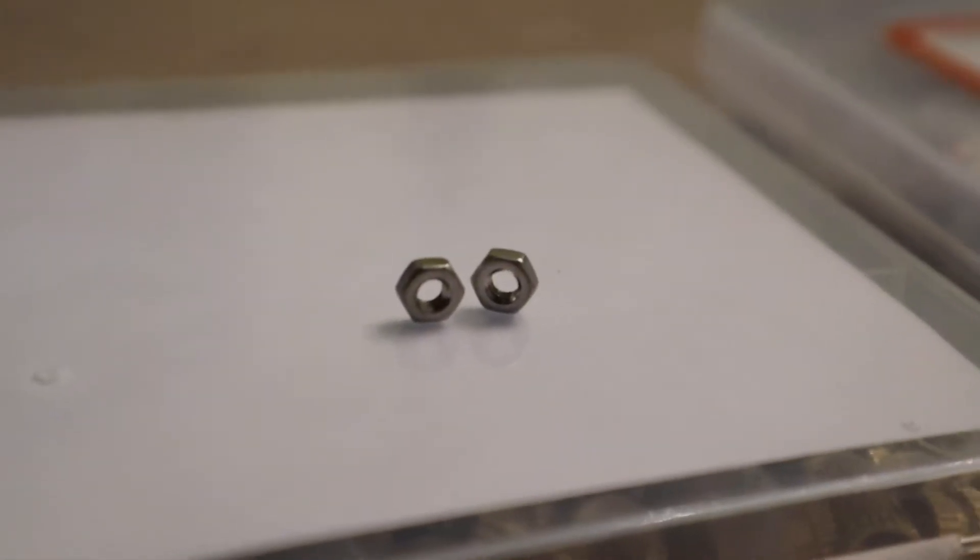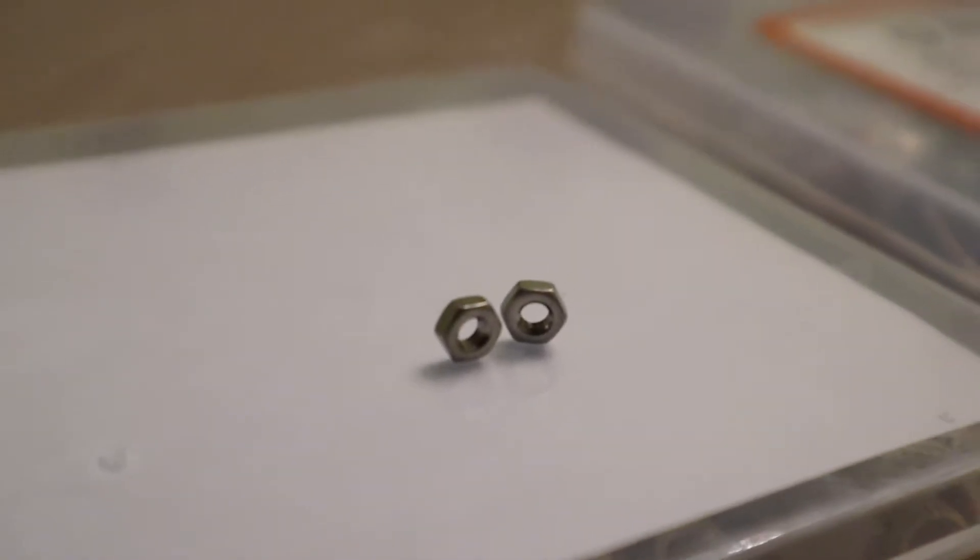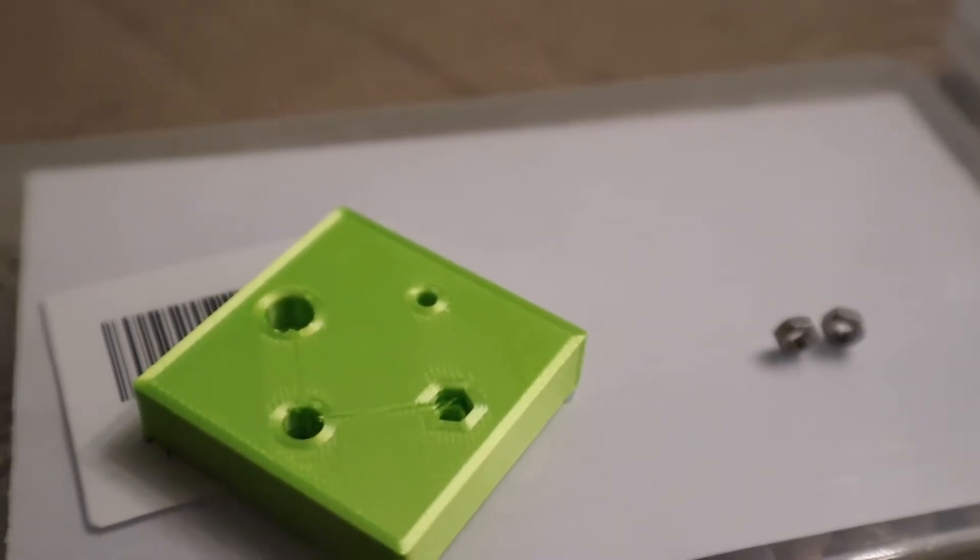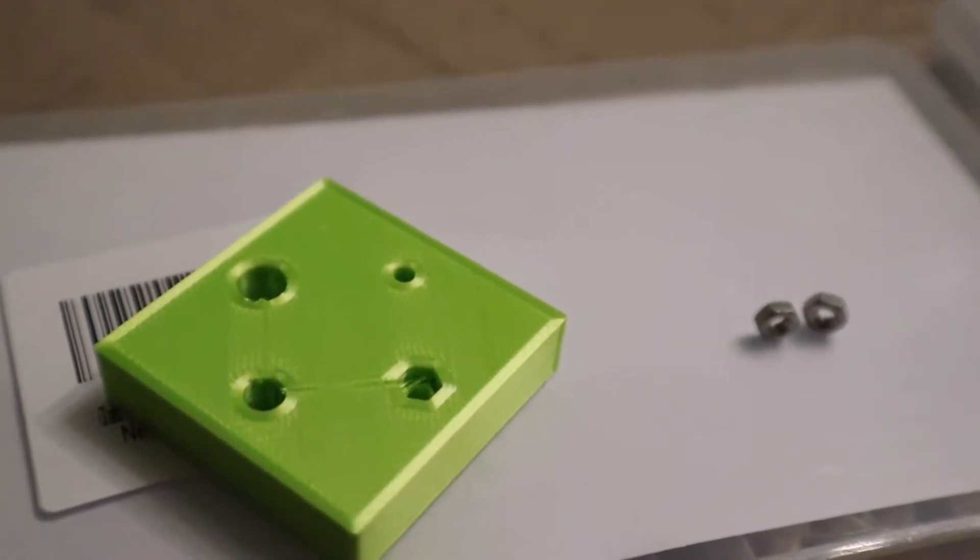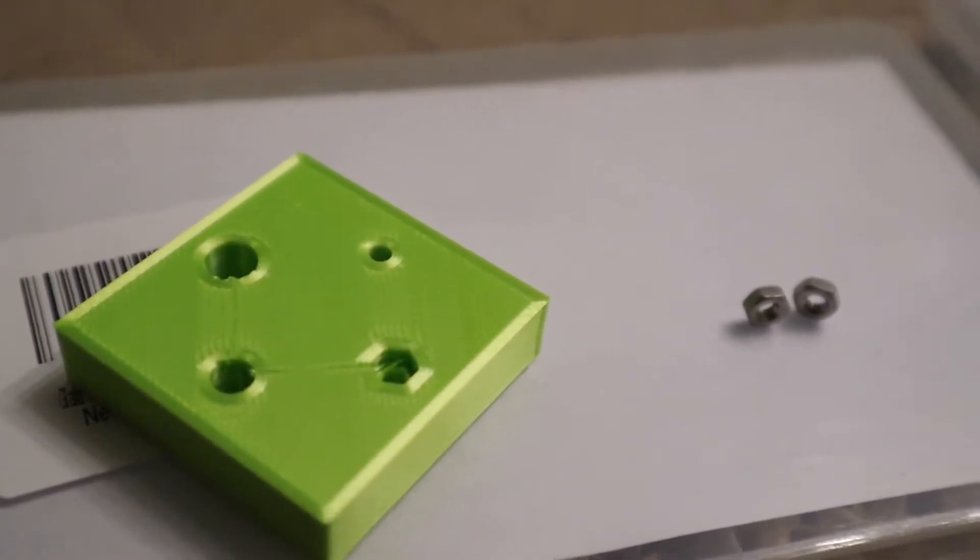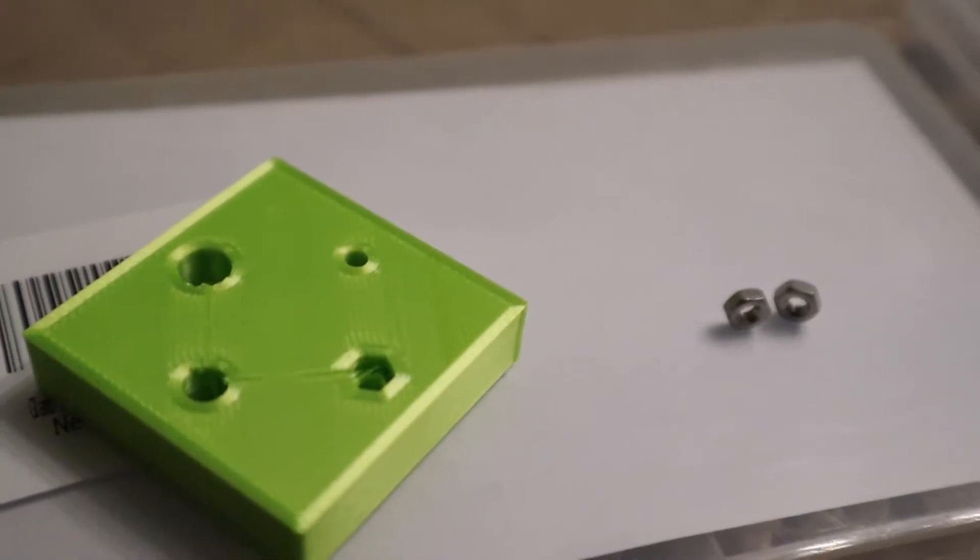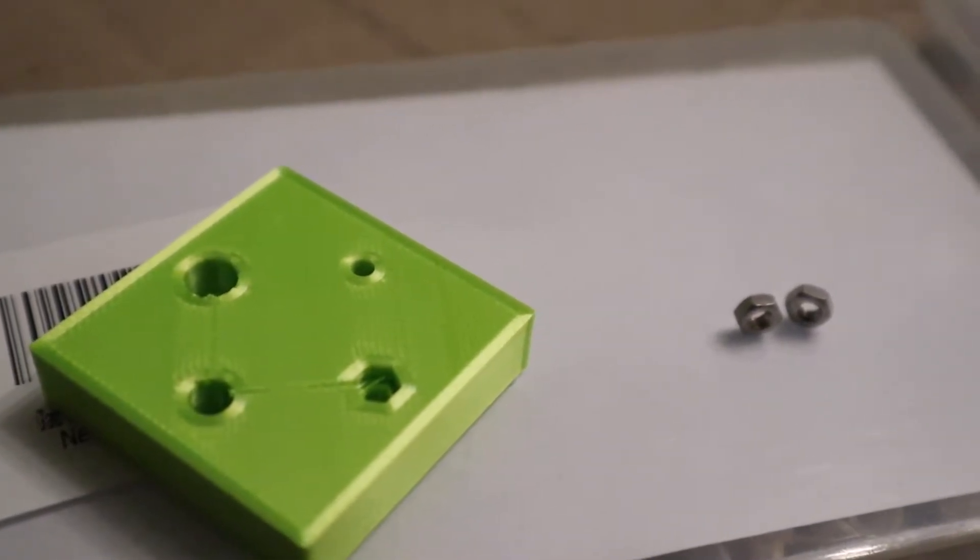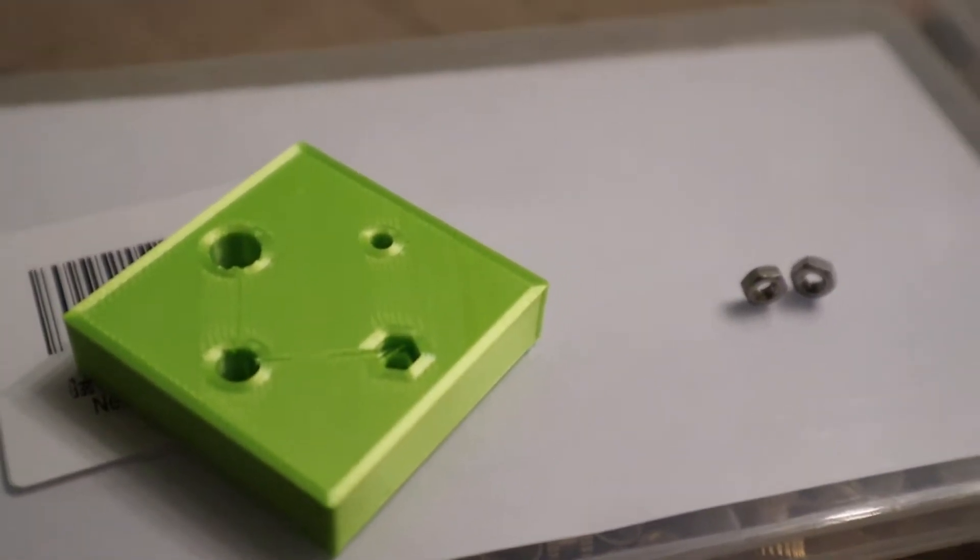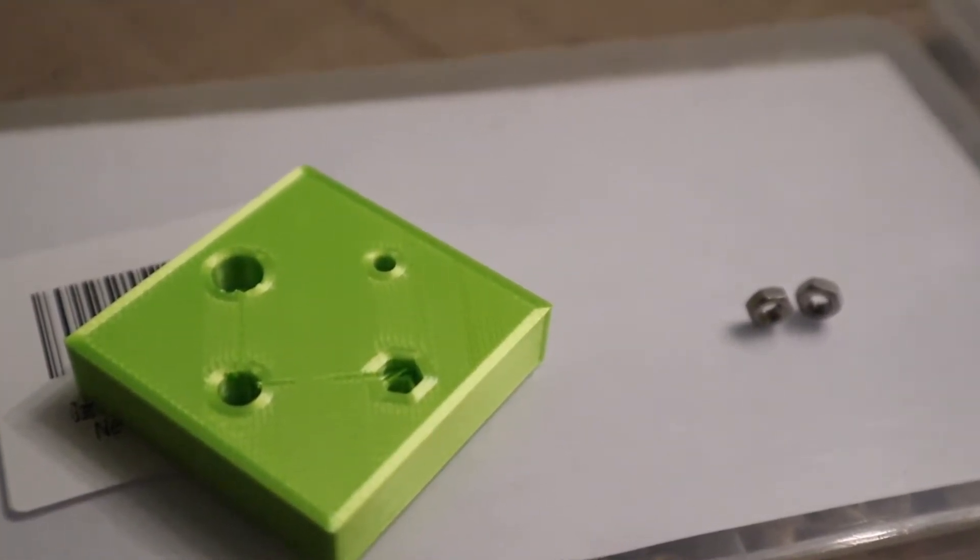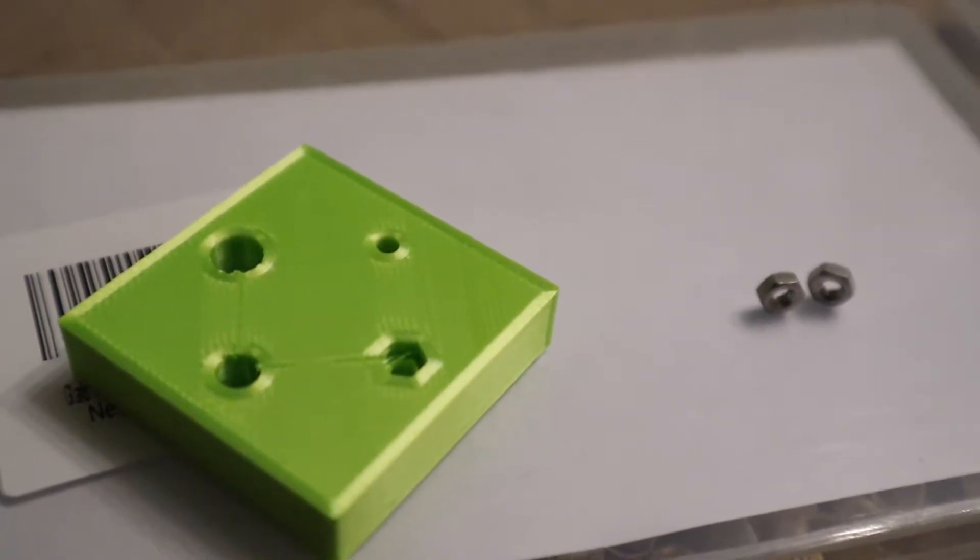The next strategy we're going to go over is using an M3 nut. You can pick these up at Lowe's, super cheap. It's like a dollar for a whole box. And it's super easy to install them into the part. So at design time you do have to plan for this. And you put a hexagon extrusion in at exactly the distance between two points on the nut. So for an M3 nut it is six millimeters.